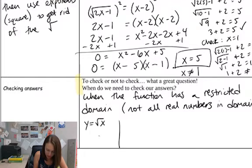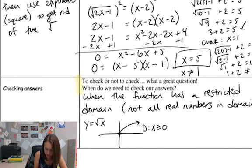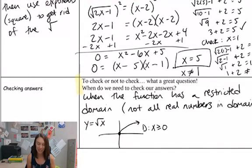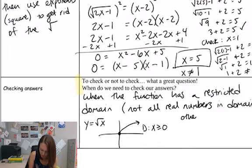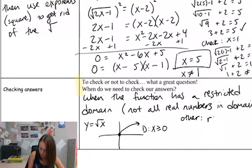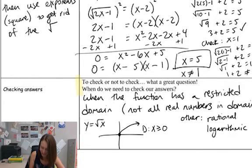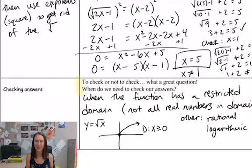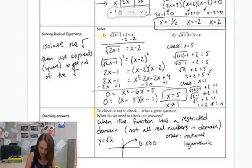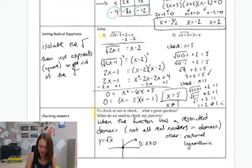But square root functions — if I have y equals the square root of x and I graph this thing, it starts here and goes in this direction. My domain is x is greater than or equal to zero — it's not all real numbers. So I have a restricted domain, and I have to check my answers. Other types of equations that have restricted domains in this course are going to be rational functions and logarithmic functions. There are lots of different types of functions we have to check our answers for.